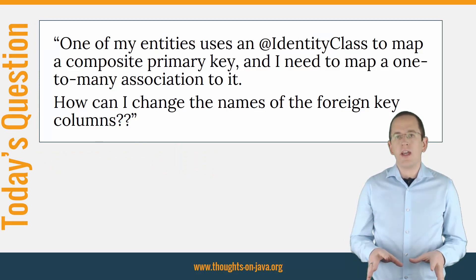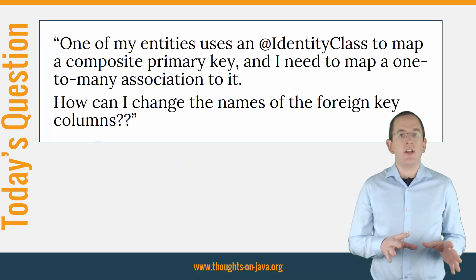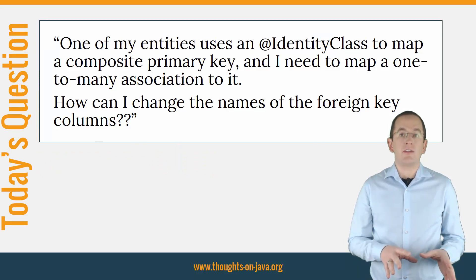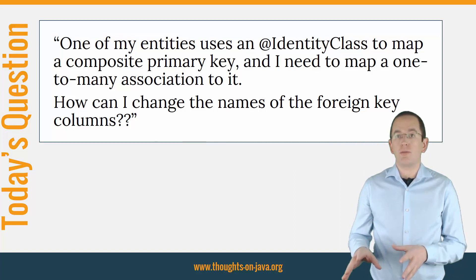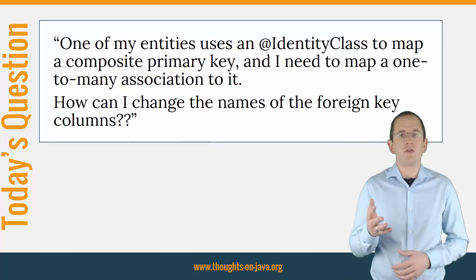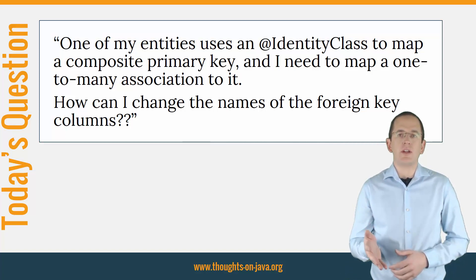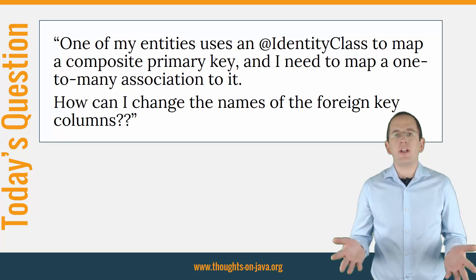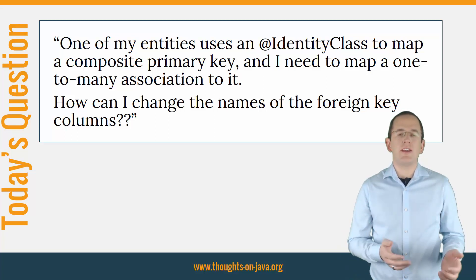One of my entities uses an ID class to map a composite primary key and I need to map a one-to-many association to it. How can I change the names of the foreign key columns?